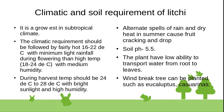Alternate spells of rain and dry heat in summer cause fruit cracking and drop. Soil pH should be between 5.5 to 7, ideally 6.5 to 7.0.